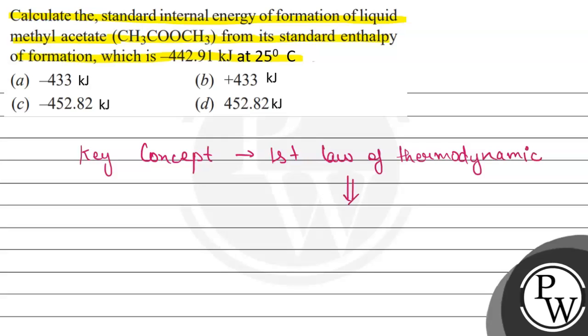According to the first law of thermodynamics, the general mathematical equation is ΔU (change in internal energy) equals the sum of heat and work done. In a thermodynamic process, this equals Q minus PV.